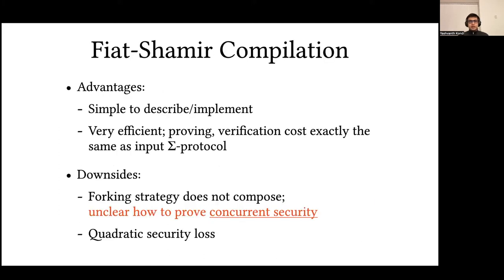The Fiat-Shamir transform has a number of advantages. It is simple to describe and implement, and it's also very efficient — it costs roughly the same as the input Sigma protocol to prove and verify. On the other hand, the forking strategy doesn't compose, and it's unclear how to prove concurrent security when using the Fiat-Shamir transform. There's also a quadratic security loss that comes from having to run the prover twice.